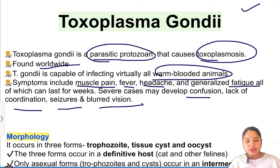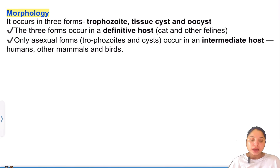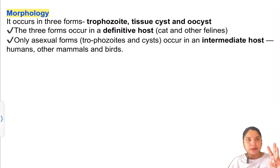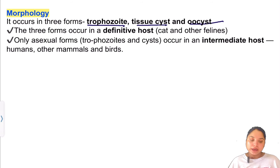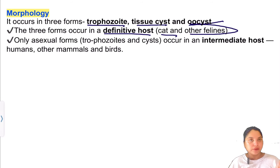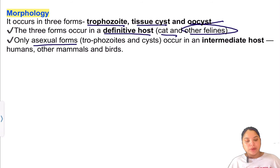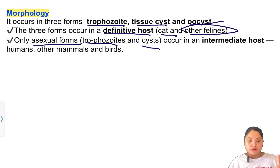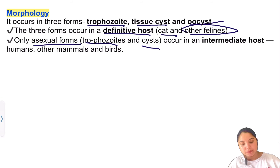If we talk about the morphology of Toxoplasma gondii, it exists in three forms: Trophozoite, Tissue cyst, and Oocyst. All three forms occur in the definitive host, which is the cat and other felines. The intermediate hosts are humans, mammals, and birds, where only the asexual form occurs.